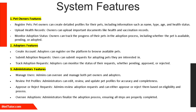The Pet Adoption System offers a range of features designed to streamline the adoption process for pet owners, adopters, and administrators. Pet owners can easily register their pets by creating detailed profiles that include essential information such as the pet's name, type, age, and health status. They can also upload important health and vaccination records, ensuring potential adopters have access to accurate and updated information.